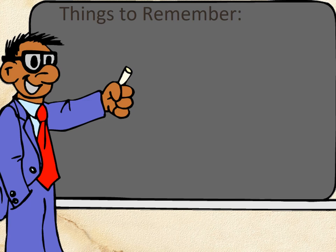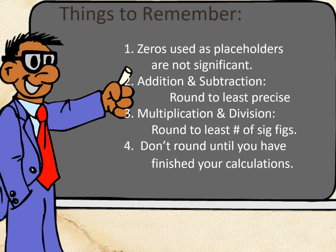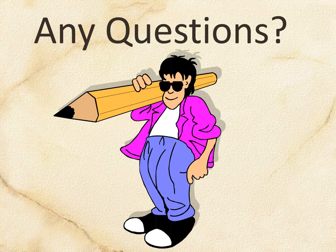Things to remember: zeros are placeholders that are not significant. For addition and subtraction, always round to the least number of decimal places. For multiplication and division, always round to the least number of sig figs. And only round at the very end of your calculations — do not round in the middle. That's the end of sig figs. We'll work on more significant figures in class; let me know if you have any questions.